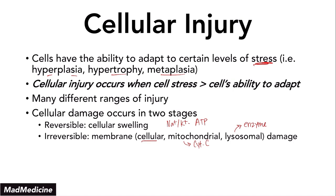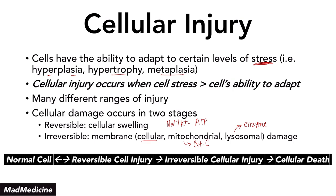You cannot go back from irreversible cell damage, as the name says. So this is the central dogma: from a normal cell, if you put some stress on it, you can go to the reversible cell injury stage. At this point, if you get rid of the stress, you will go back to a normal cell. But if you do not, you will progress all the way from reversible to irreversible to eventually death.